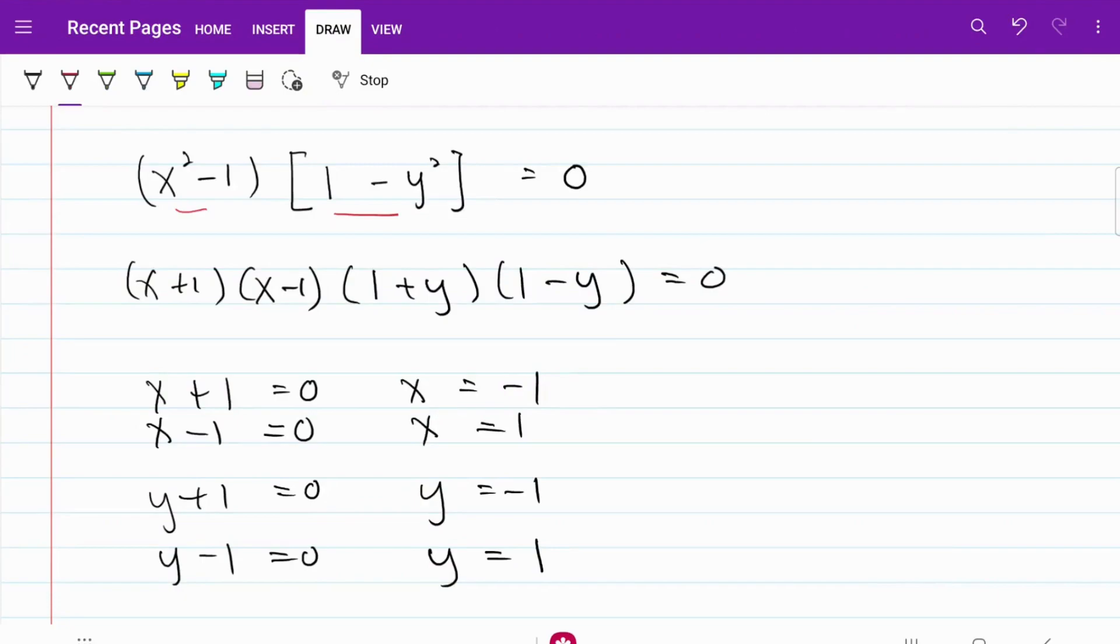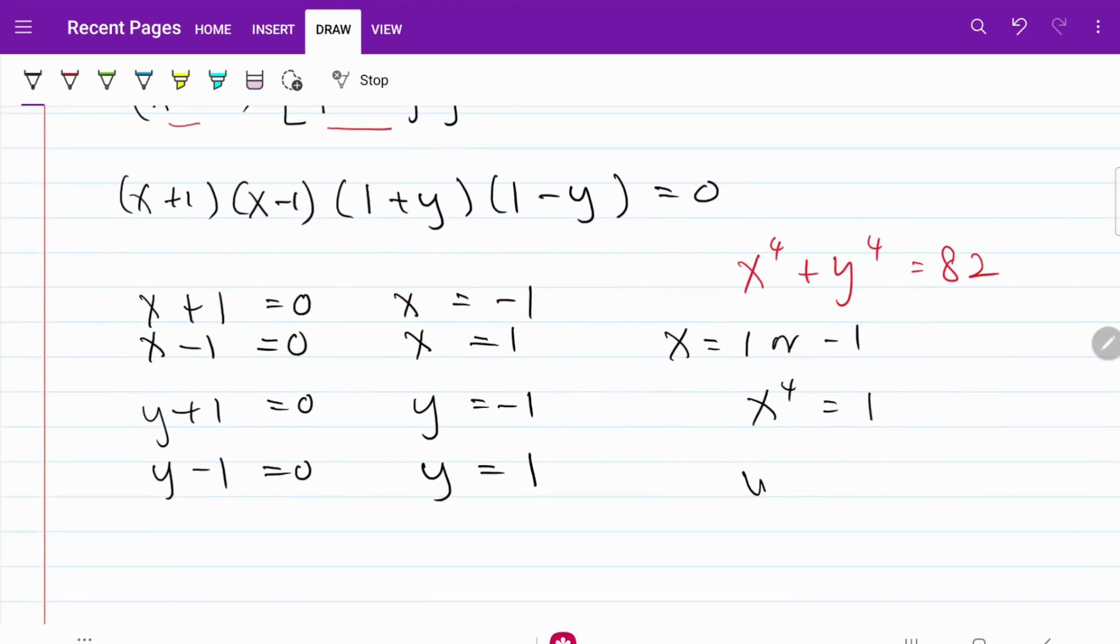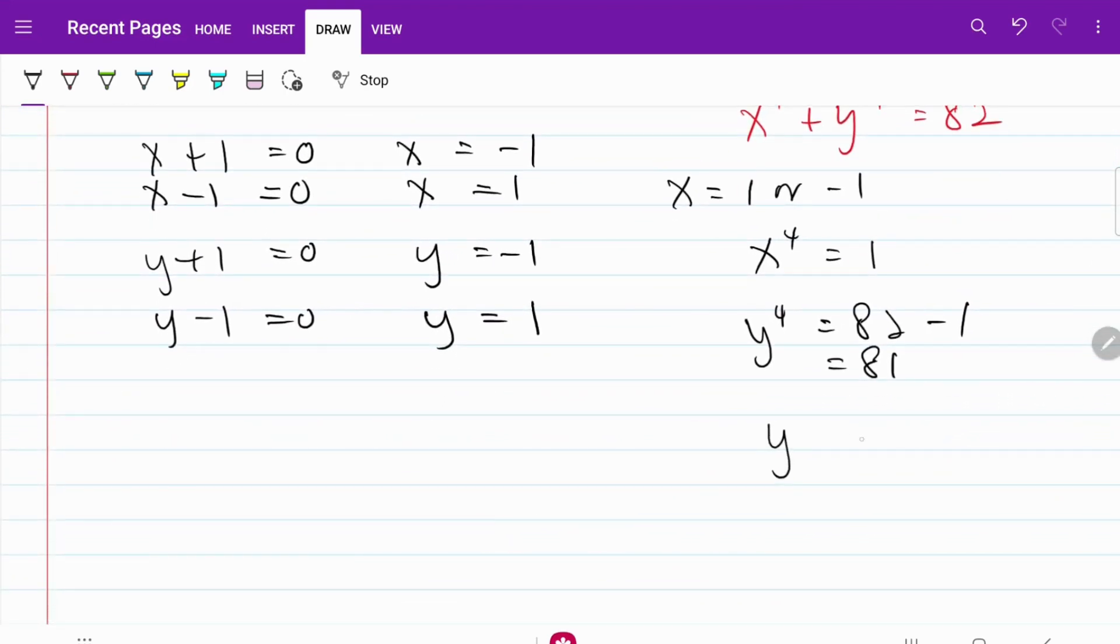One of the original equations that we are given is x to the fourth power plus y to the fourth power is equal to 82. So when x is equal to 1 or negative 1, x to the fourth power will be equal to 1. Therefore, y to the fourth power is equal to 82 minus 1, which is equal to 81, and y is equal to plus minus 3.